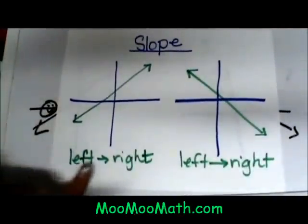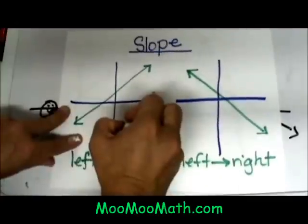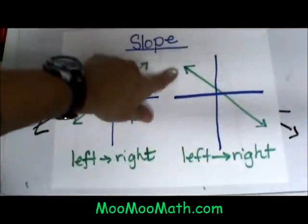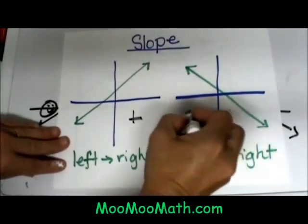So an overview is from left to right, you're going up, it's positive. And if you're going down from left to right, the slope is negative.